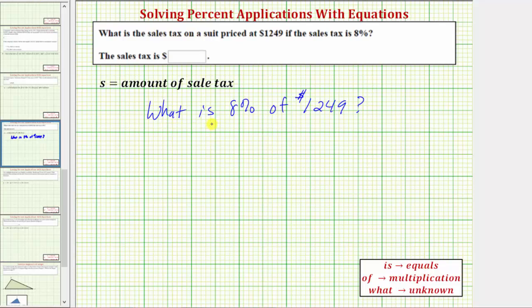So because we have what is, our equation begins with s equals. Next, we're given 8%. Whenever we're given the percentage, we must convert this to a decimal.